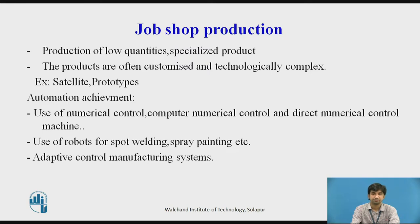Job shop production involves the production of low quantities of specialized products. The products are often customized and technologically complex. Examples include satellites and prototypes. Automation is achieved through the use of numerical control, computer numerical control, and direct numerical control machines, robots for spot welding and spray painting, and adaptive control manufacturing systems.